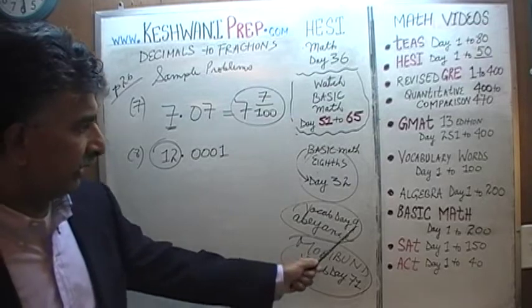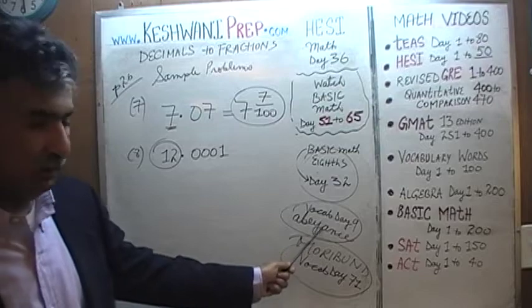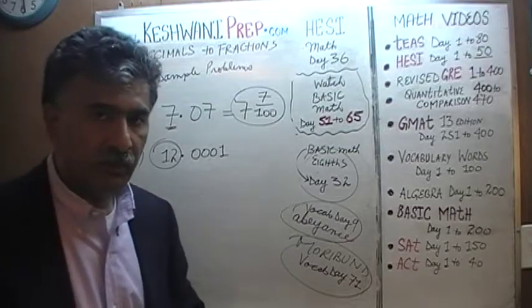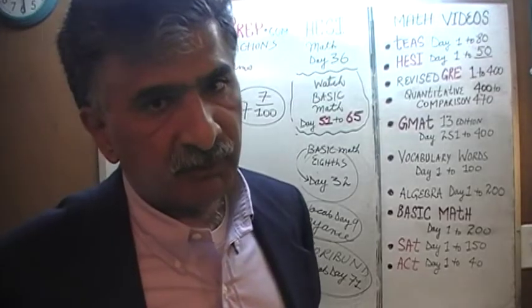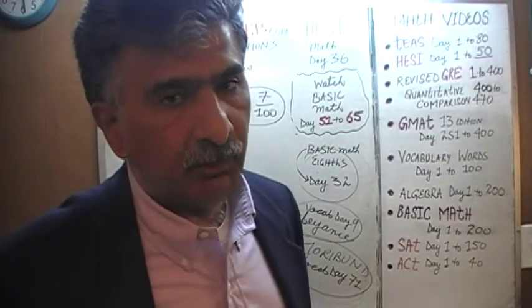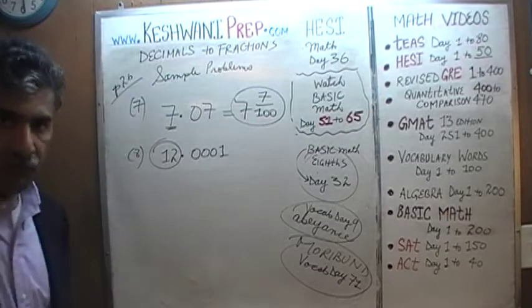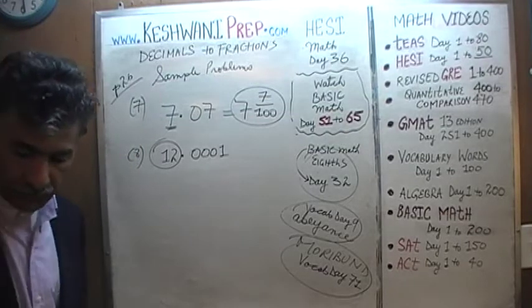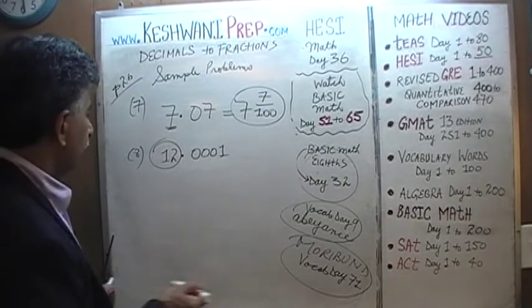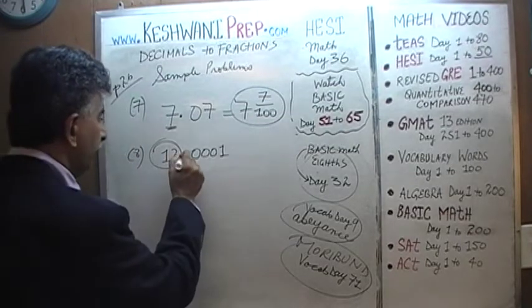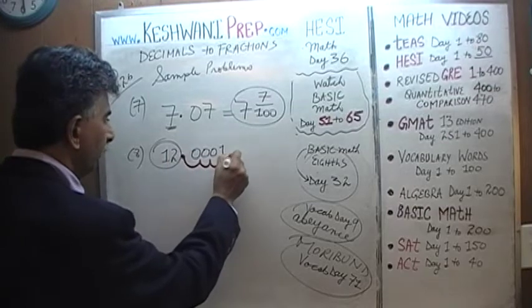We learned the word 'abeyance' in our vocabulary videos — on day number 9 in our vocabulary lessons. It simply means to keep something aside, put it away, we'll deal with it later. Let's concentrate right now on 0.0001.